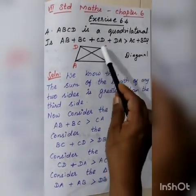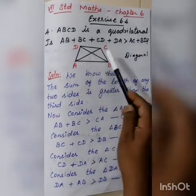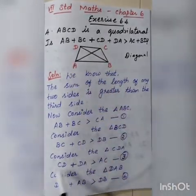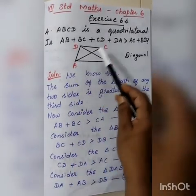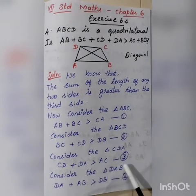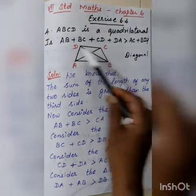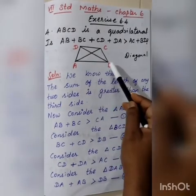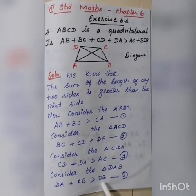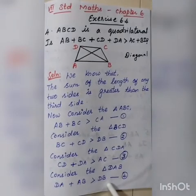The third triangle is CDA. The two sides CD plus DA is greater than the diagonal AC. That is equation 3. The fourth triangle is DAB. Any two sides added — DA plus AB — is greater than DB. That is equation 4. So we have four equations from the four triangles of the quadrilateral.